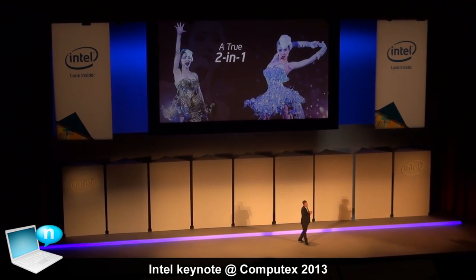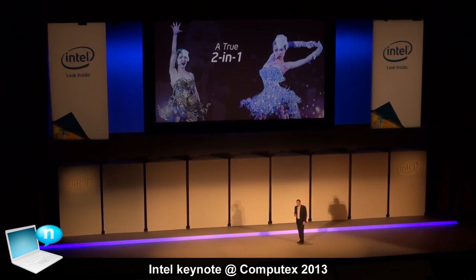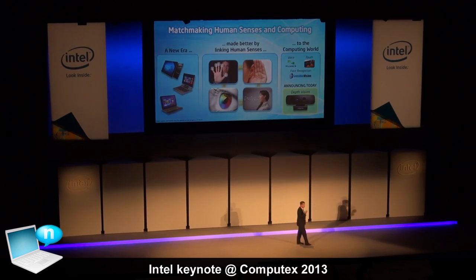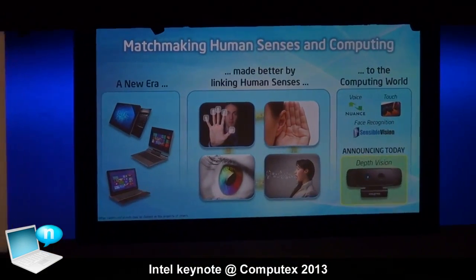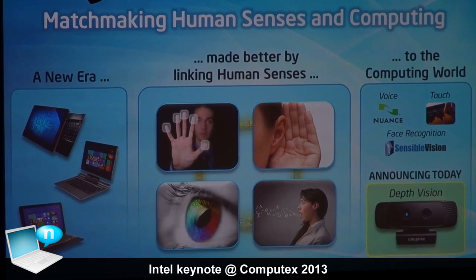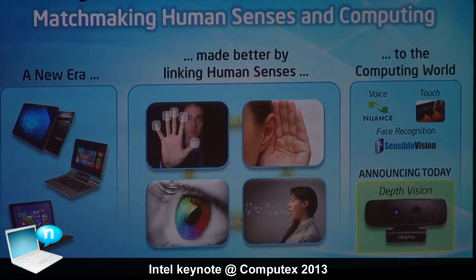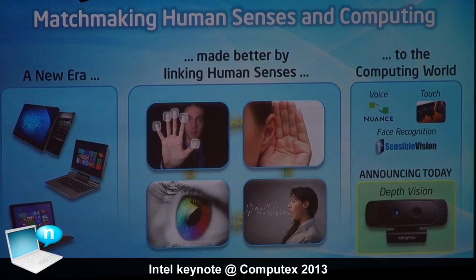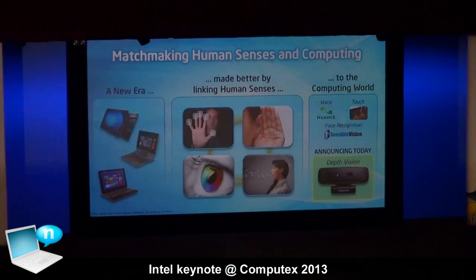As stunning as those designs are, form factor innovation is just not good enough on itself. Last year I talked about matchmaking human senses and computing, because it's really about experience and what technology makes possible. We're well on the path with voice, touch, gesture, and facial login. But like humans, computers need two eyes as well for depth. So today we're announcing a Creative SensR 3D camera, which will be available in Q3 to enhance this more natural interface.